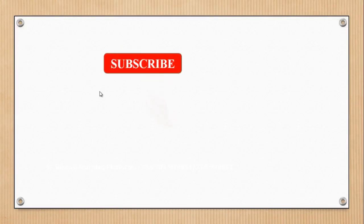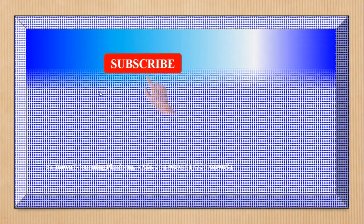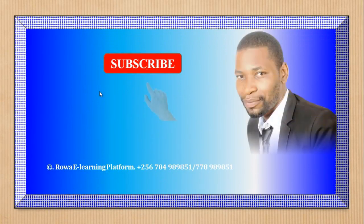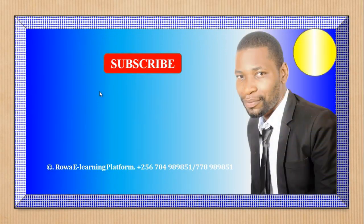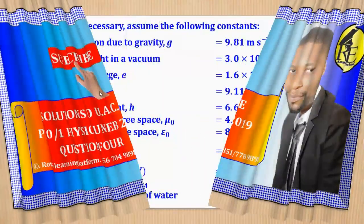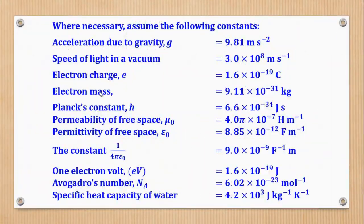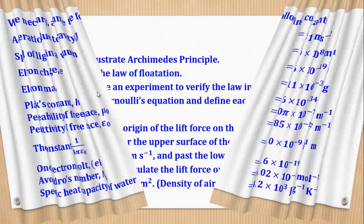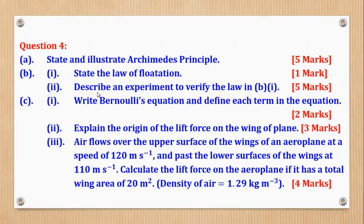Hello viewers, this is Wargo Dario taking you through the tutorial on A-Level Physics. In this tutorial we are going to talk about the solutions to A-Level Physics for UNEB 2019, Paper 1, and particularly Question 4. Where necessary these constants can be used. This is the very question I left in the previous video, and I believe by now you have already tried it out and are ready to check your progress. So let's get started.